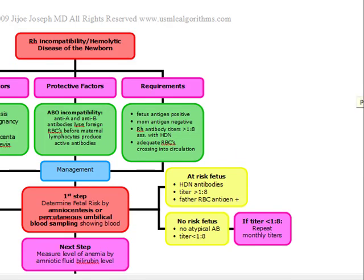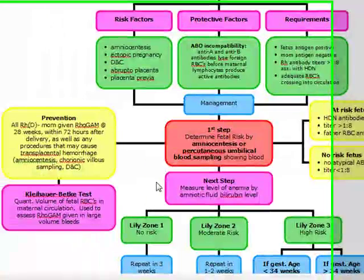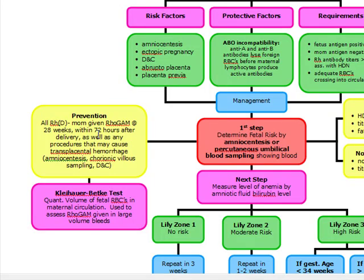To prevent RH incompatibility, we give RhoGAM, which is pooled anti-D IgG passive antibodies. These are given intramuscularly to pregnant women when there is a significant risk of fetal RBCs passing into the circulation. All RHD-negative moms are given RhoGAM at 28 weeks, then again within 72 hours after delivery. It is also given with any procedures that can cause transplacental hemorrhage, such as amniocentesis, chorionic villus sampling, and DNC.